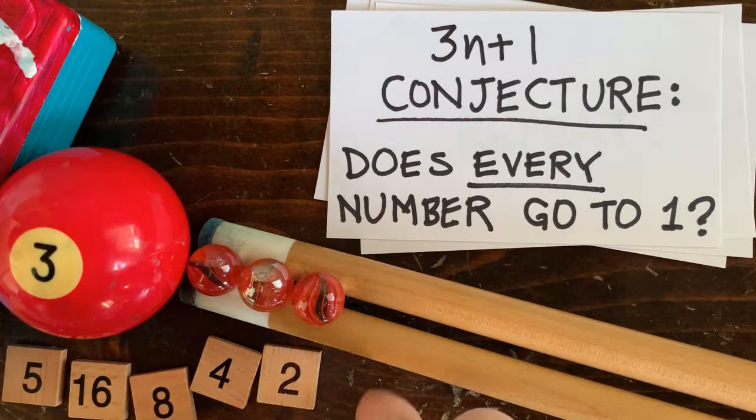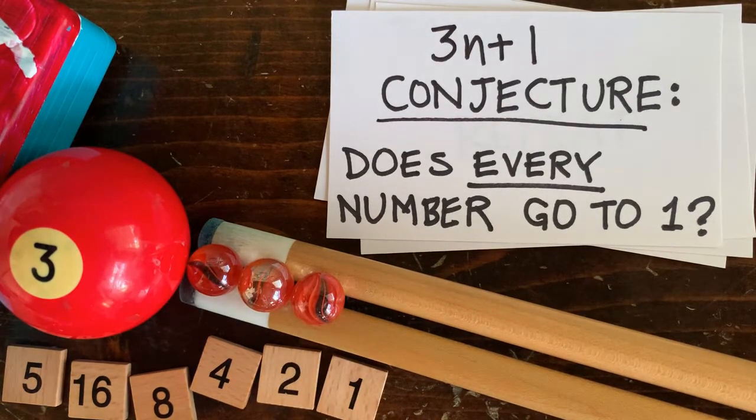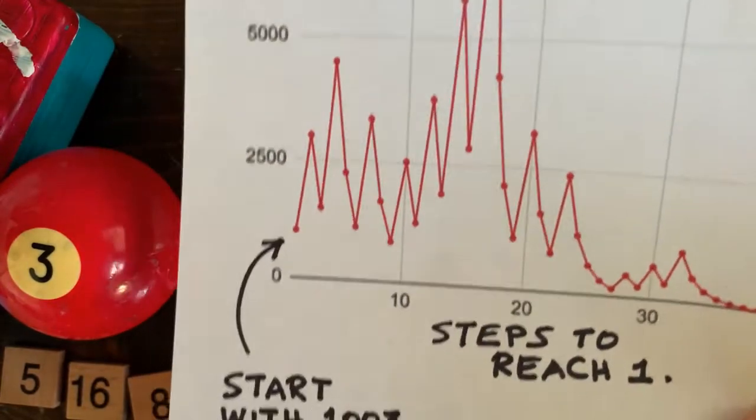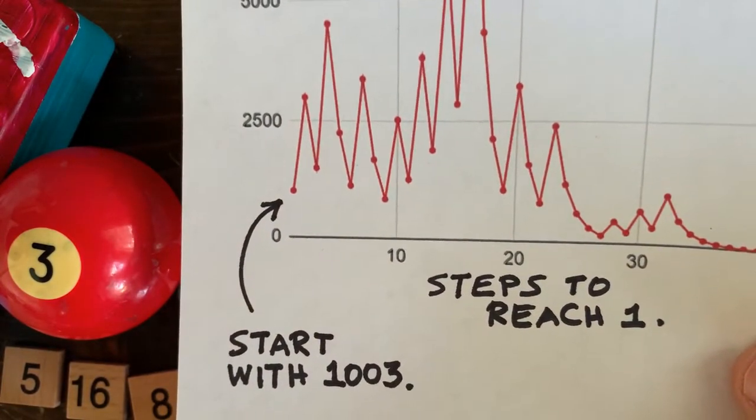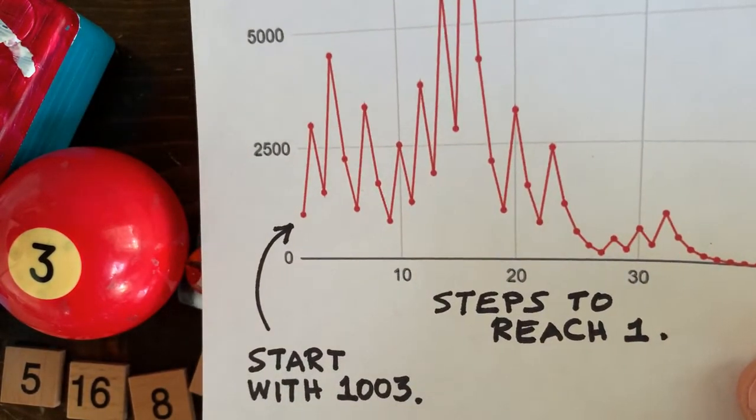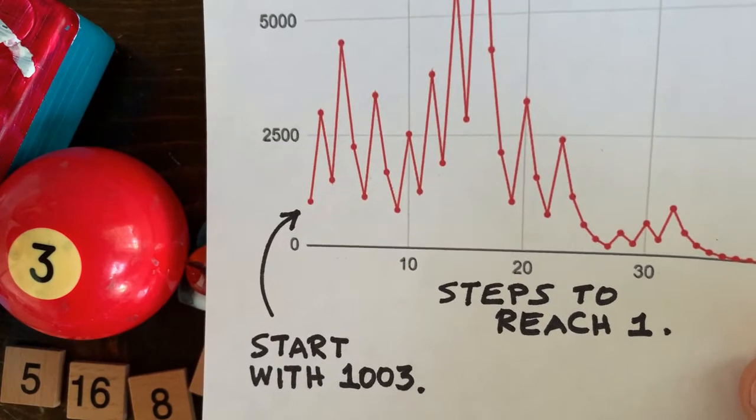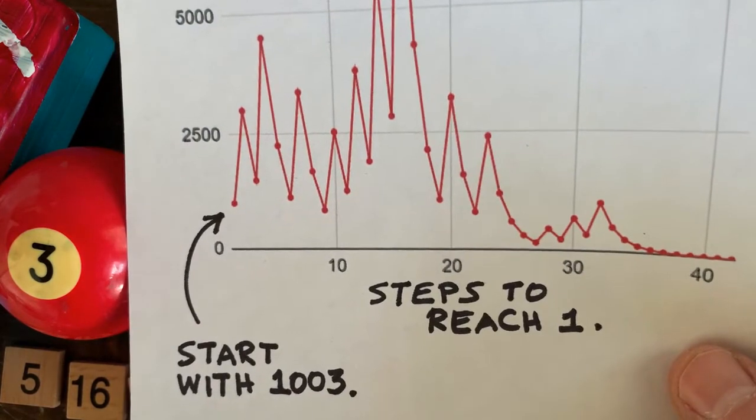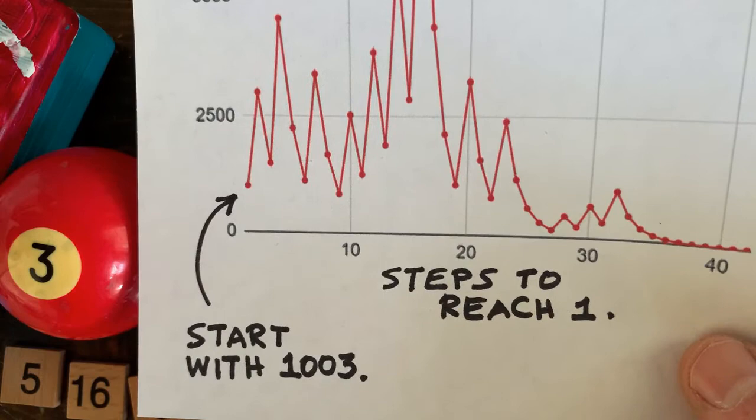Here's what happens if we start with the number 1,003. You can see it goes up, then down, and then up and down in a kind of random looking way until it finally reaches 1. And we looked at lots of start numbers last time, and they all go to 1.